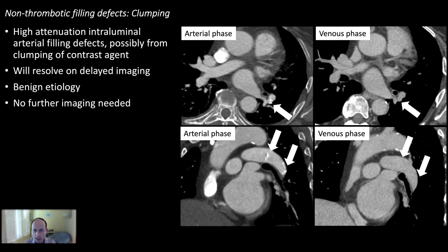One phenomenon that confuses many people: small hyperdense foci in the pulmonary arteries. People question whether there is embolized material. In this case the finding was present on the arterial phase and resolved on the venous phase — we believe it represents clumped intravenous contrast, possibly adherent to small thrombus. If you see these hyperdense foci in pulmonary arteries, they are usually nothing to worry about.